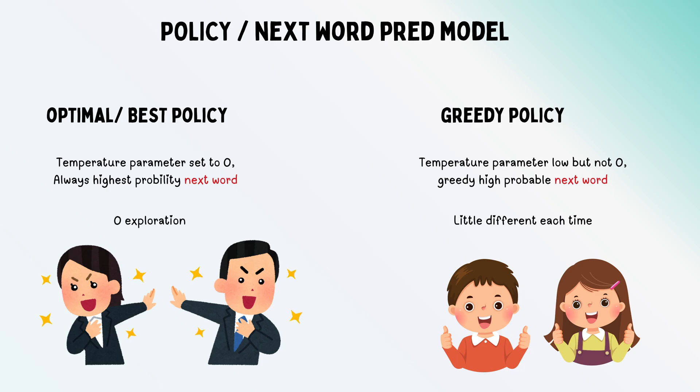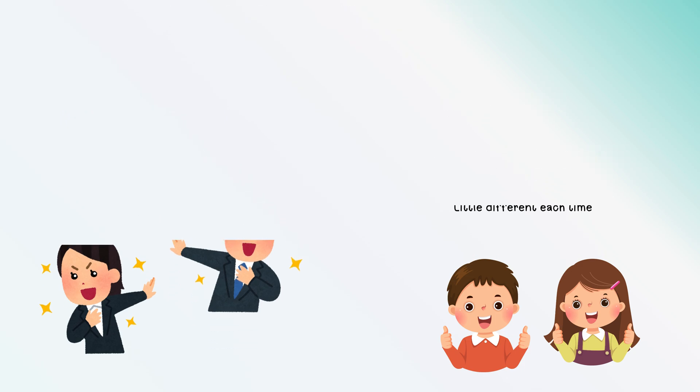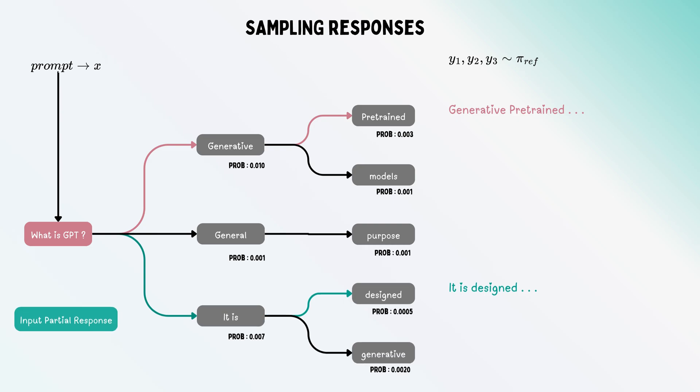If you choose optimal policy, the output is deterministic. But most times we use a greedy policy—a slight variant where we choose one of the highly probable tokens and keep constructing responses. This way we can get N number of responses.